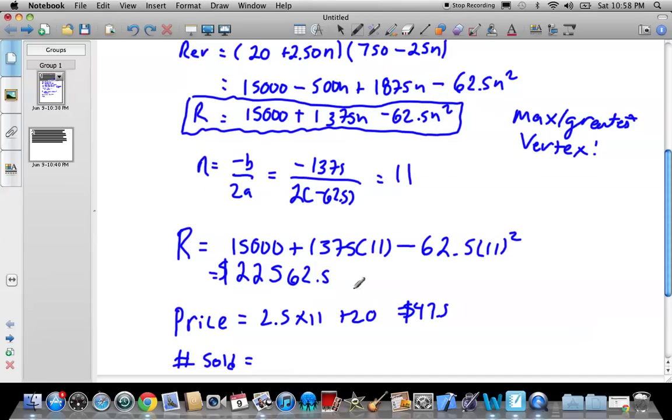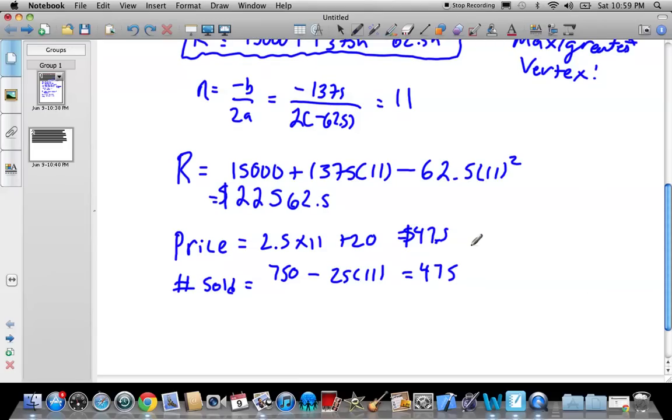Number sold: 750 minus 25 times 11. So 25 times 11 is 275, so minus 275. So he sells 475 flowers. So if we want to figure it out now and check our answer, we can multiply these two numbers together and see what it gets. We get exactly the same number, so we are good.